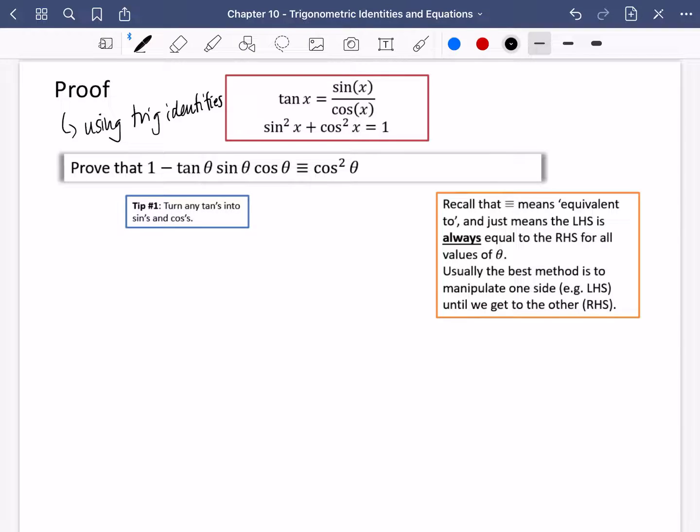So what we're being asked to do here is prove that 1 minus tan θ sin θ cos θ is equivalent to, what this symbol means here, this three-line symbol, cos squared θ.